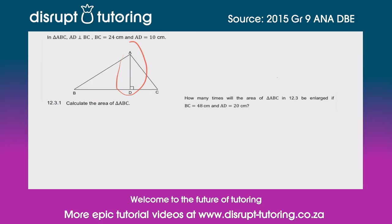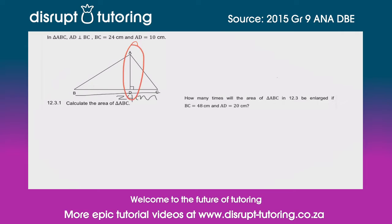We can see they've already inserted the right angle showing AD is perpendicular to BC. BC at the base is equal to 24 centimeters — I'll indicate that there. AD is equivalent to 10 centimeters — I'll mark that as well. Now moving into the first question: calculate the area of triangle ABC.